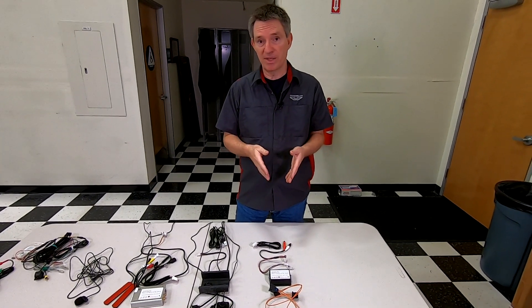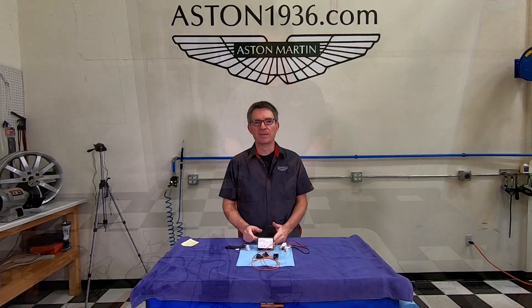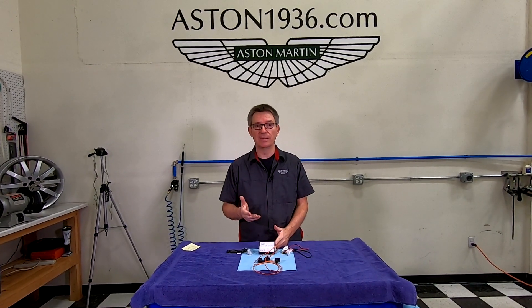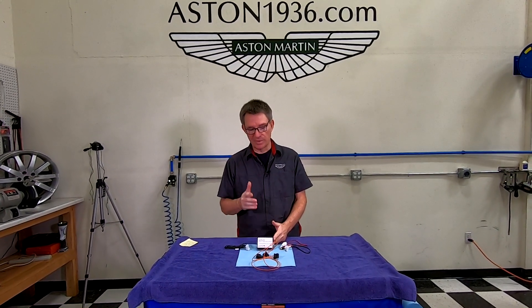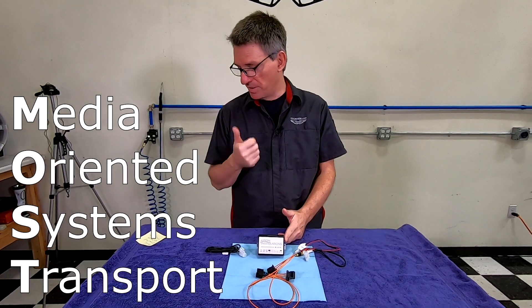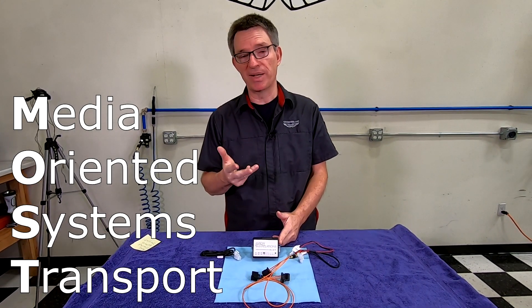So let's head over to the bench and have a closer look at it. The infotainment system in a DB9 or a Vantage Aston Martin communicates using a MOST bus. MOST stands for Media Oriented Systems Transport, and it's an automotive standard to have all the different infotainment components talk to each other.